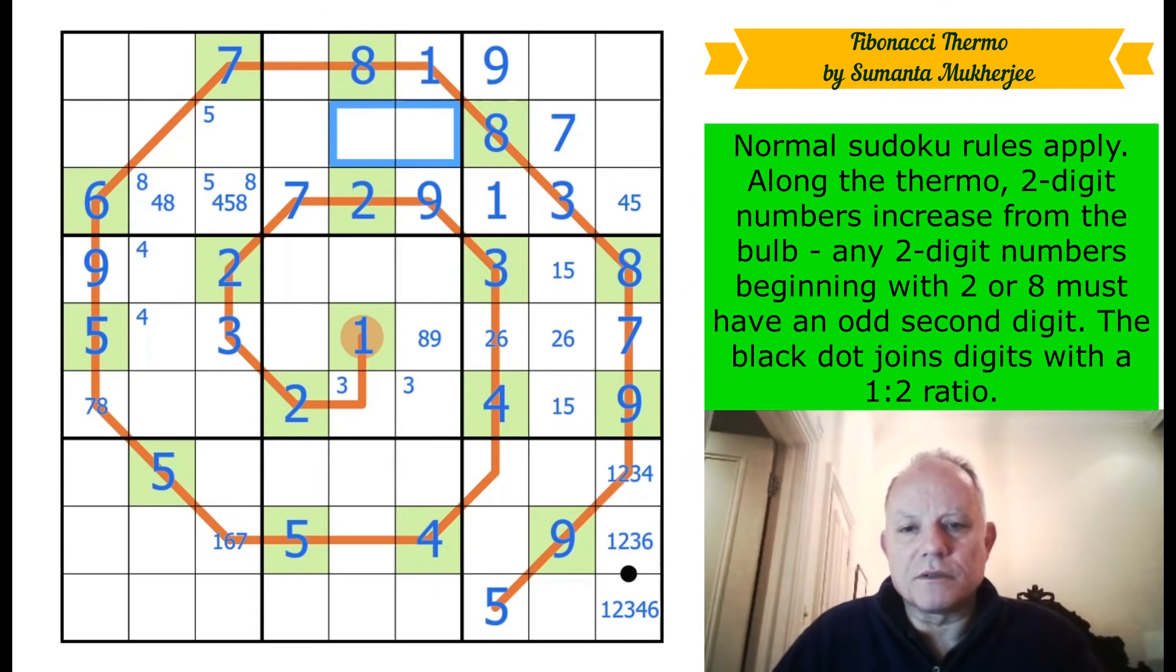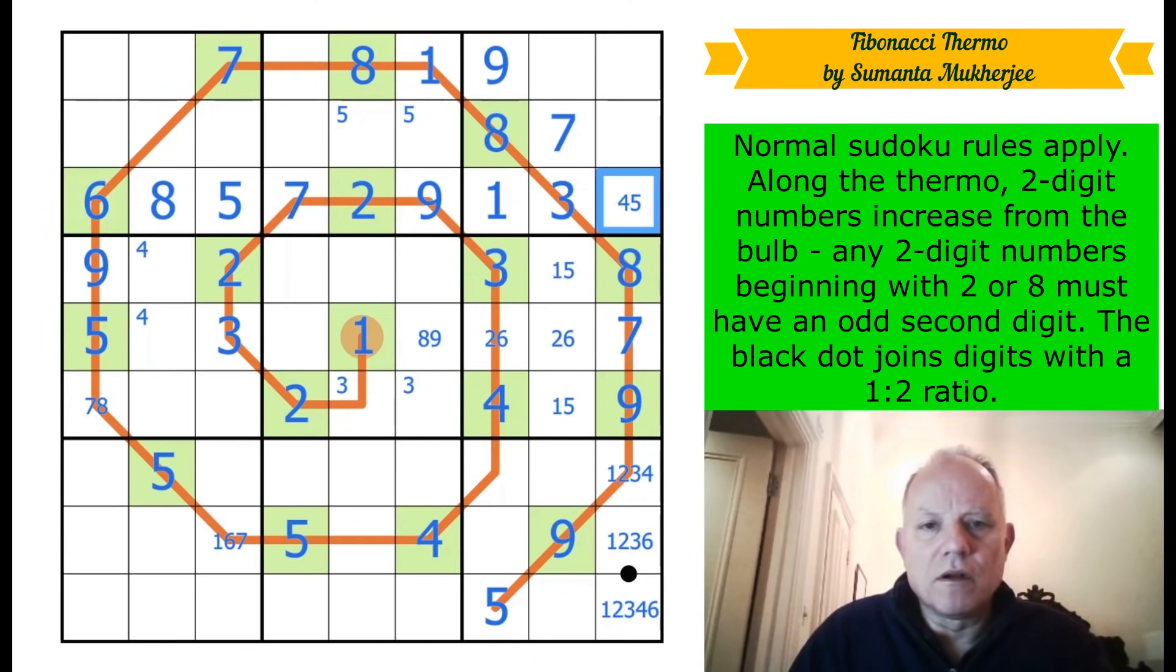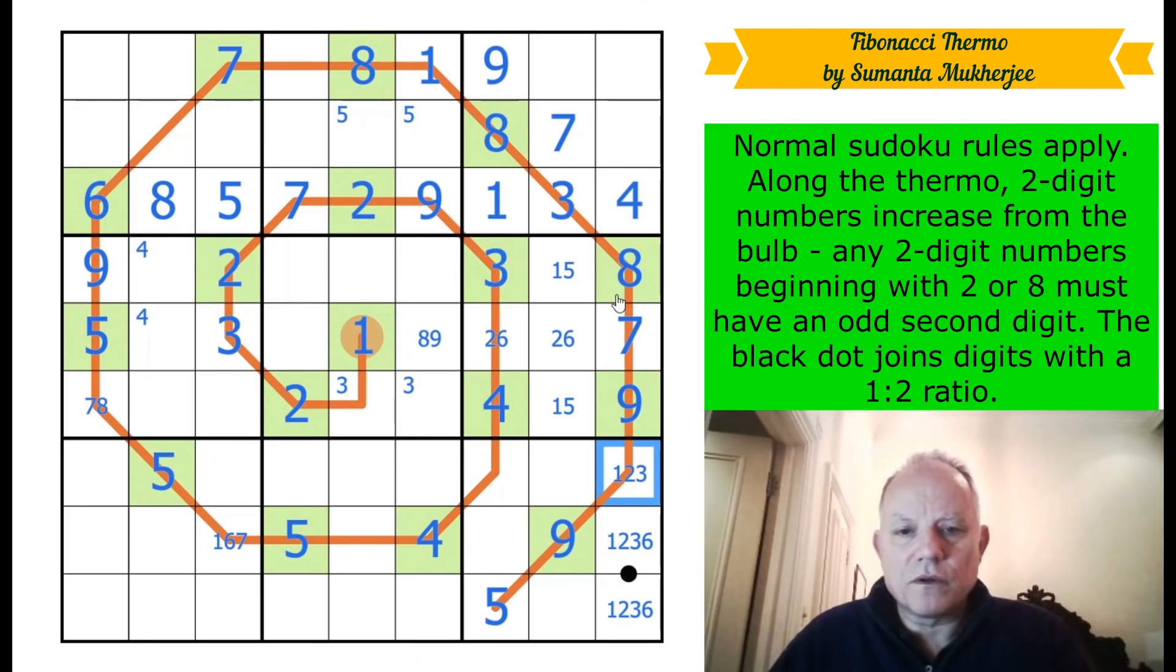So five is in one of these two cells in box two and can't be there. So this is a five and that fixes this row. Get four there. Now there's no four on this crop key dot or in that cell. Four, seven, eight, nine. Not that helpful. Two, five, and six up here.